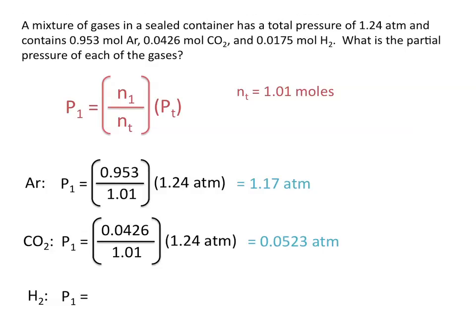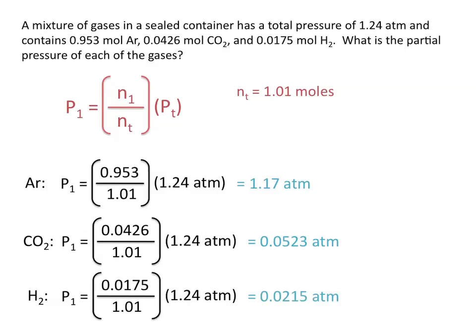And for H2, the mole fraction is 0.0175 divided by 1.01, multiplied by the total pressure of 1.24 atmospheres, which tells us that the partial pressure of H2 is 0.0215 atmospheres. Thanks for watching the Chemistry Solution — we hope you enjoyed this tutorial.